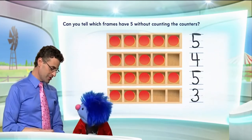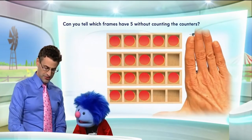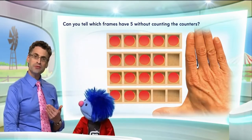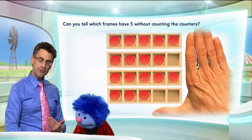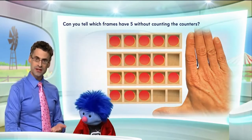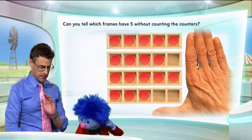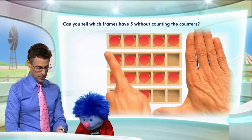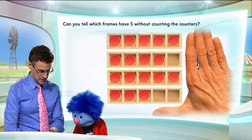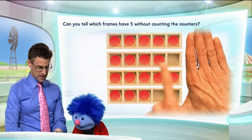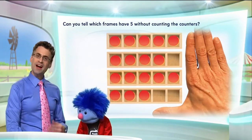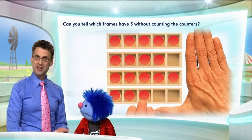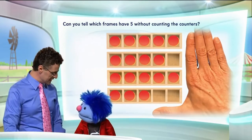Now here's what I'm going to do — you're going to be upset because I'm going to cover them all up. And what I'm going to do is have us look at these five frames and see if we can figure out which five frame has five counters, not by counting, just by looking at them. Which five frame has five counters? This one does — it's all filled up. That's the top one. And this one does because it's all filled up. So you can actually see which of the five frames have five counters without counting, just by looking at them and seeing if they're all filled up.